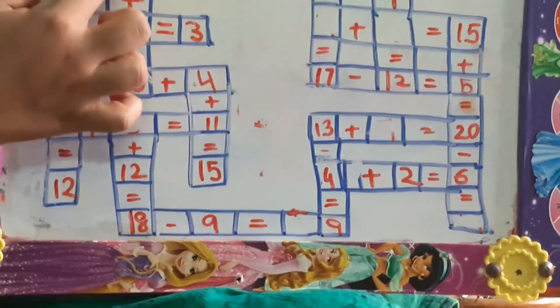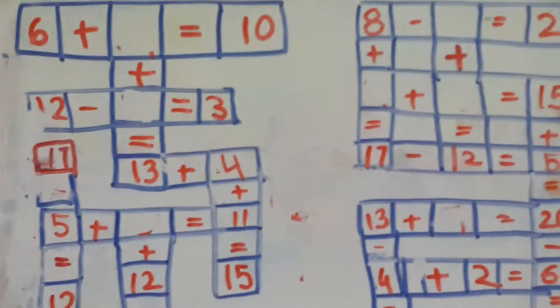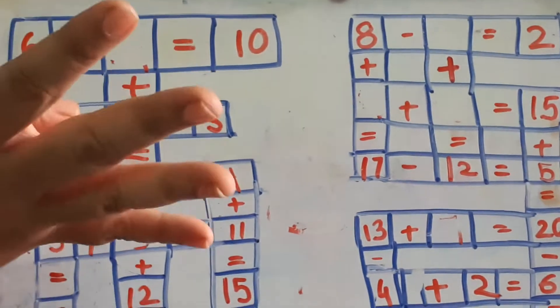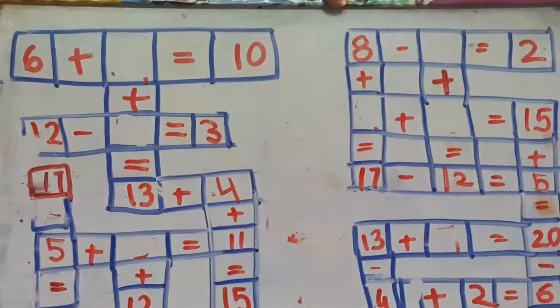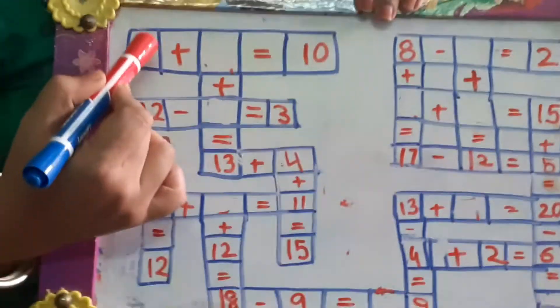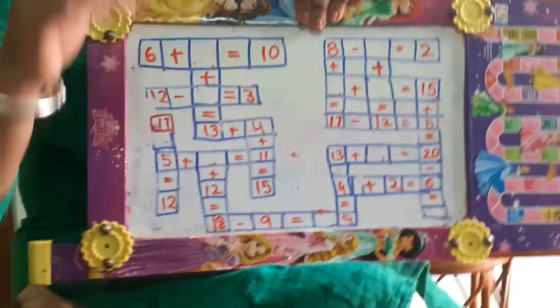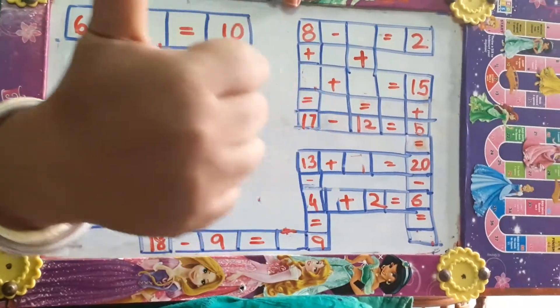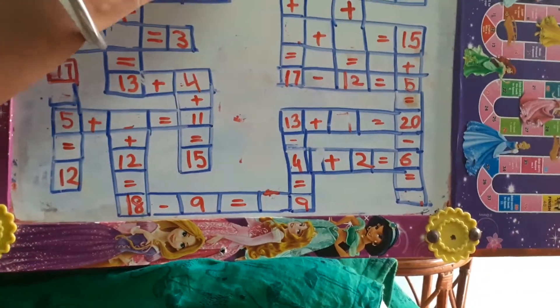Here it is 6 plus dash is equal to 10. Always remember children, when it is this addition kind of thing, you go forward by counting your fingers, and when it is subtraction, you count backward. So this is addition, so we will go forward. 6 plus dash is equal to 10. 10 in mind, 6 after, 7, 8, 9, 10. So how much we have to write?